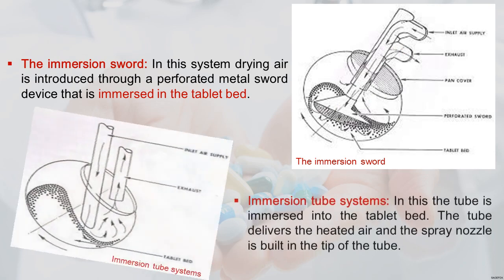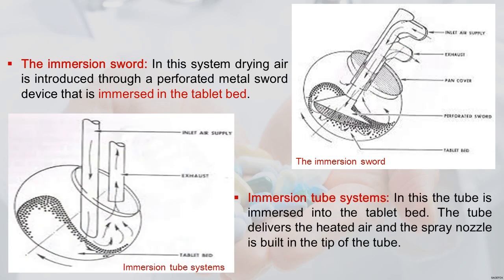The immersion tube system also has a tube immersed in the tablet bed. The tube delivers heated air, and the spray nozzle is built at the tip of the tube. It has an inlet for heated air and an exhaust pipe.